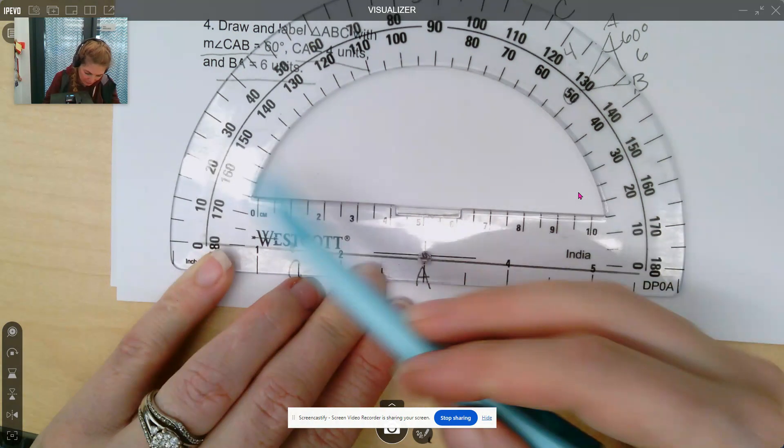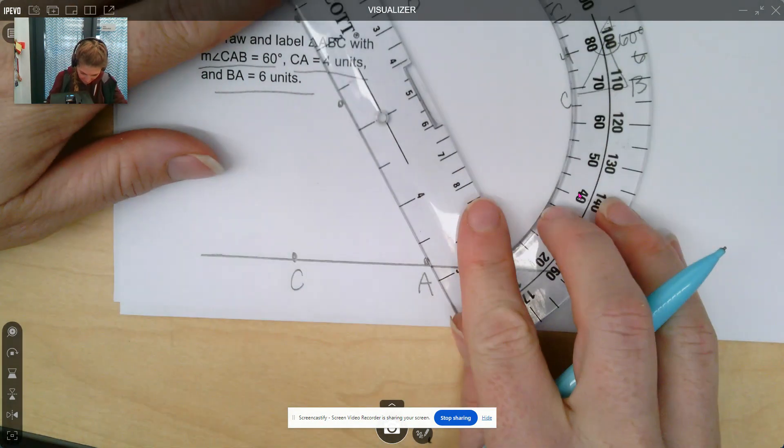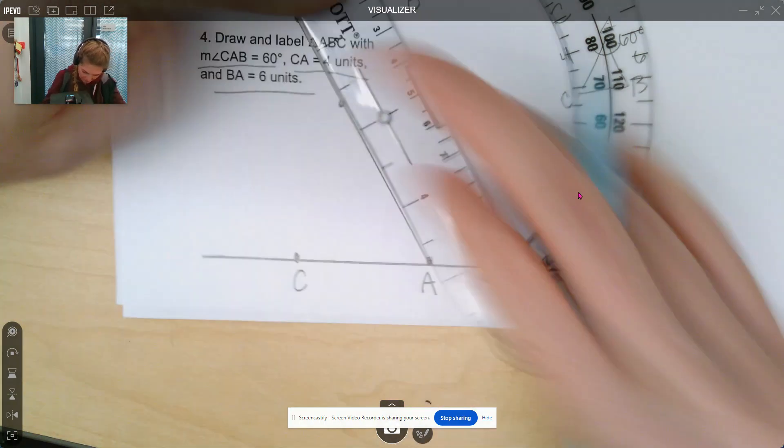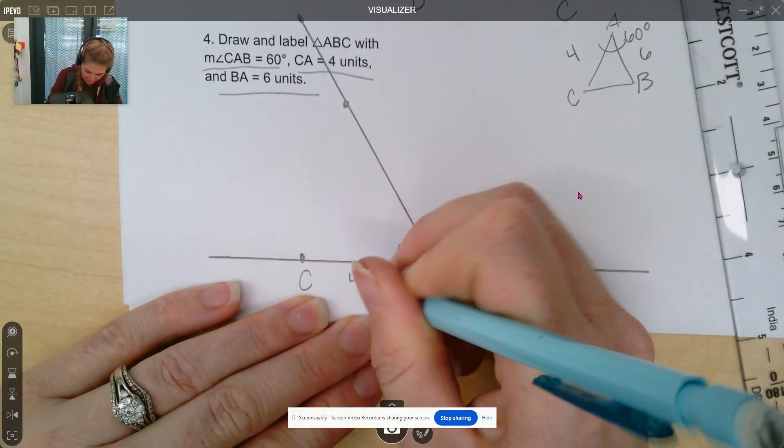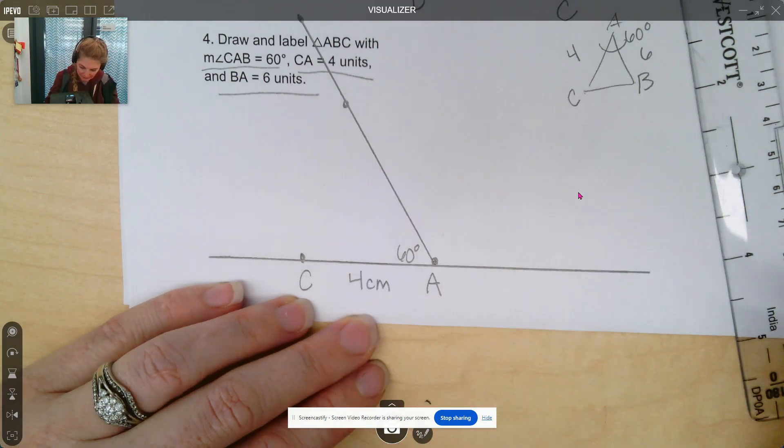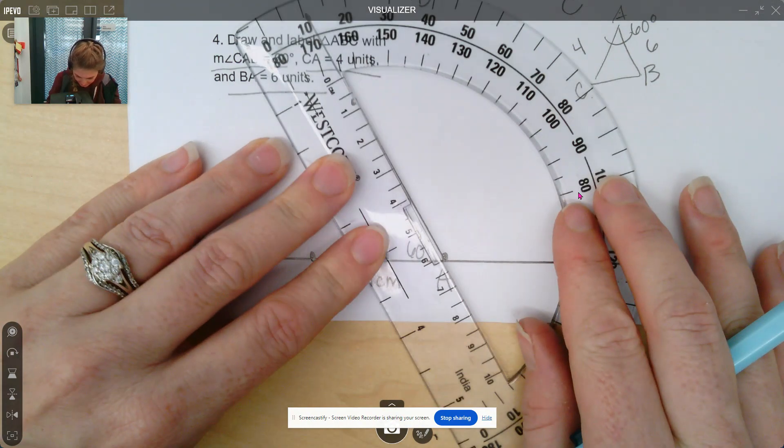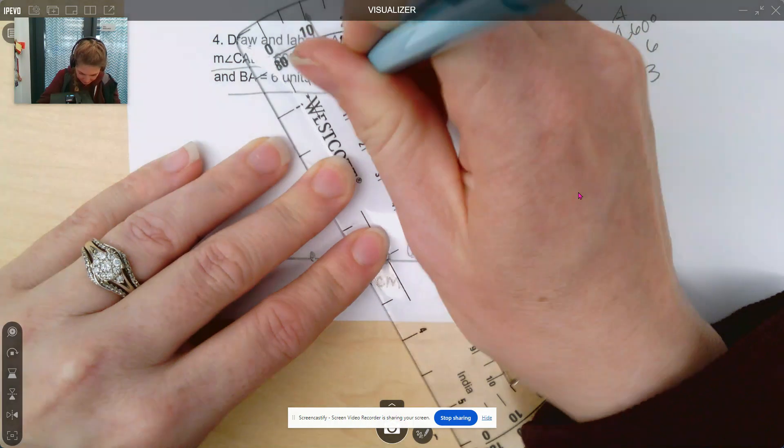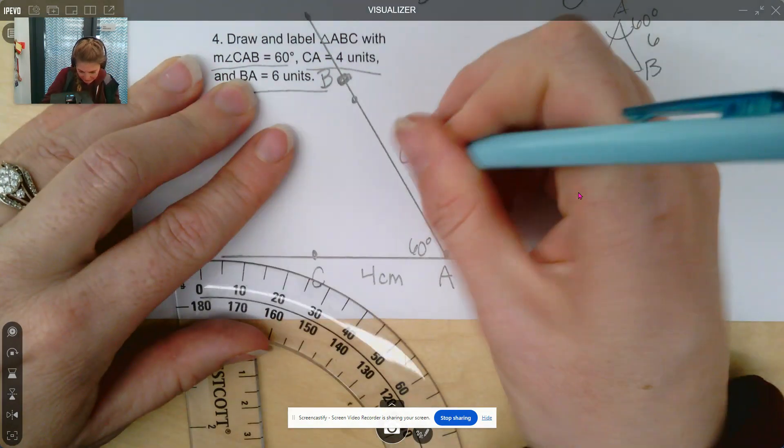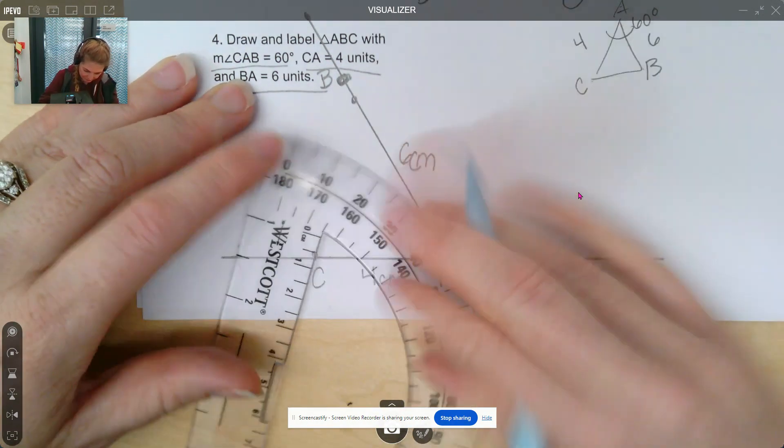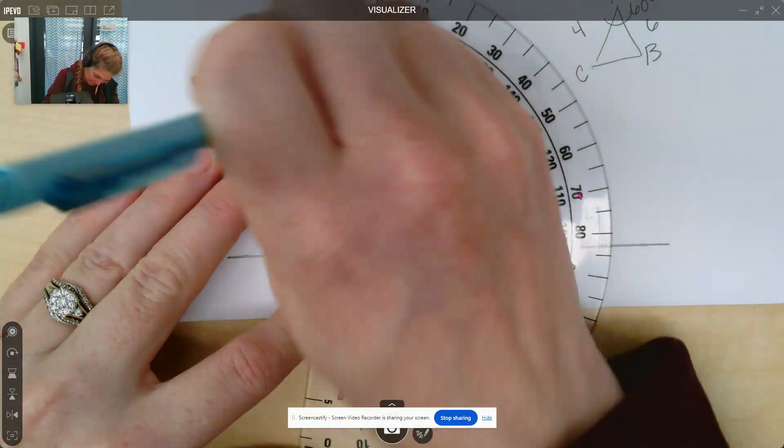And I know angle A has got to be 60 degrees, so I'm going to line up my zero. And then we're going to go up to 60 degrees from here to here. Draw my line, 60 degrees, oops, this is 4 centimeters. And A, B needs to be 6 centimeters, so I can line it up with the 6, and go to 0. So right here is going to be B, 6 centimeters. Oops, forgot my C. Connect the points there.